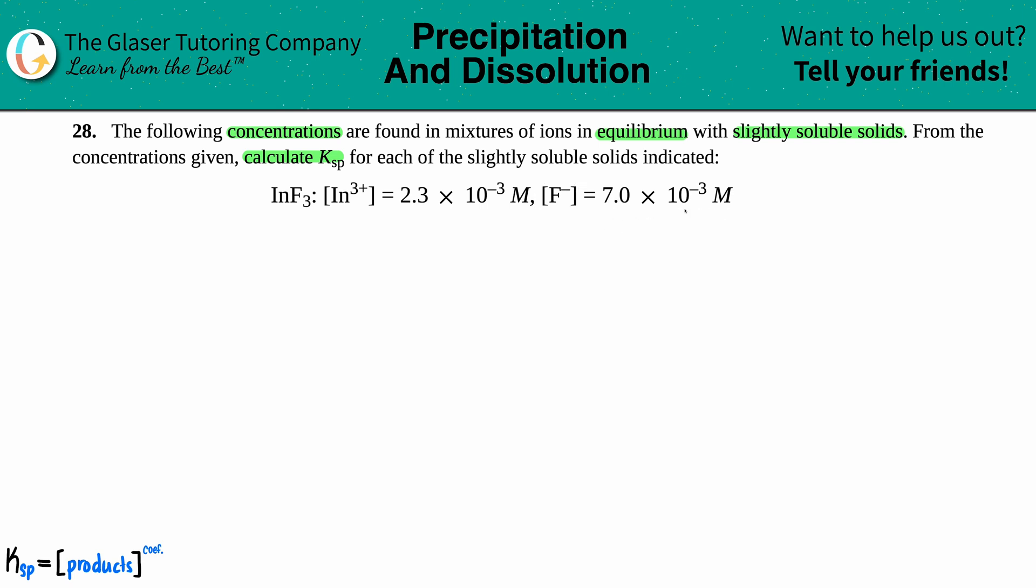If we want to calculate that Ksp, it always comes from the balanced equation. Remember with Ksps you're always going to start with your solid. They did say it was a solid compound and you're going to break it up into its ions.